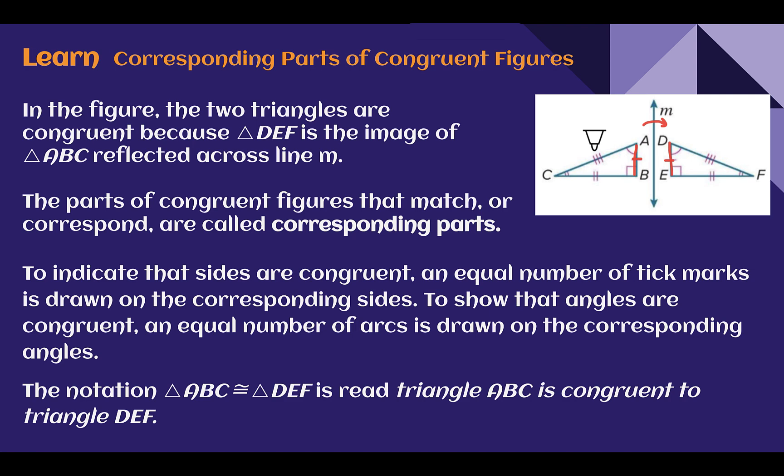For the angles, corresponding angles are shown with a number of arcs drawn. So angle A has one arc, so does angle D. Those are corresponding, they are congruent, so they would have the same measure. E and B, they're not using an arc, but they're using the right angle symbol. So we would know that they are also congruent, since they both have it. C and F both have two angle marks showing those two are congruent, they are corresponding, so they would have the same measure.